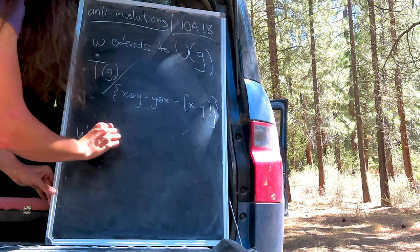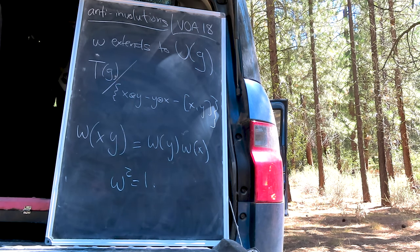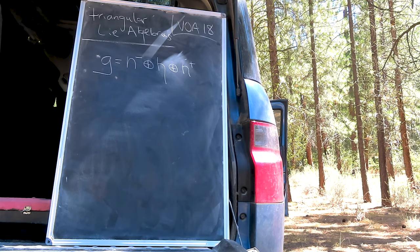This extended omega acts on the product xy as omega y times omega x for x and y in U of G. Of course, it still squares to one. Today's construction has a strong Heisenberg flavor to it, but is actually slightly more general.